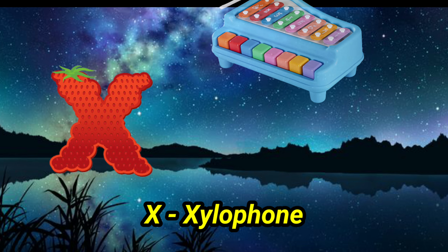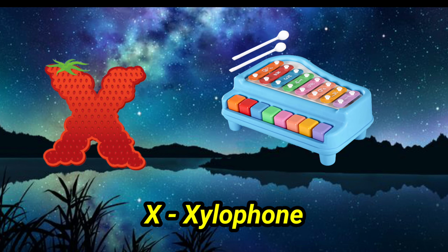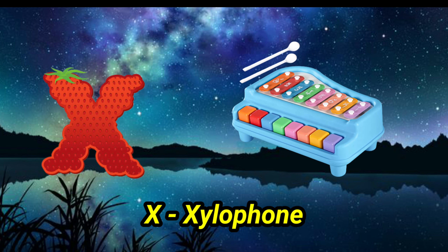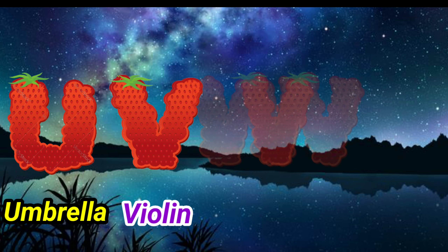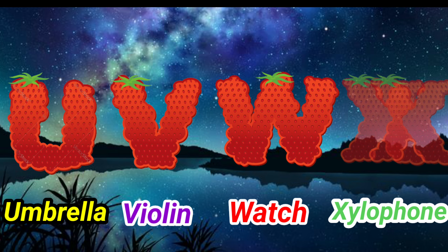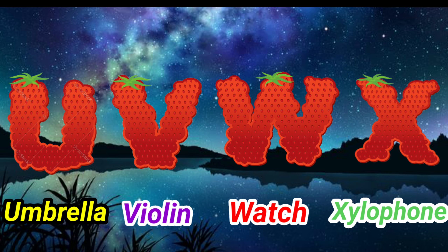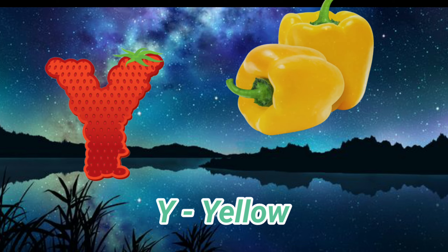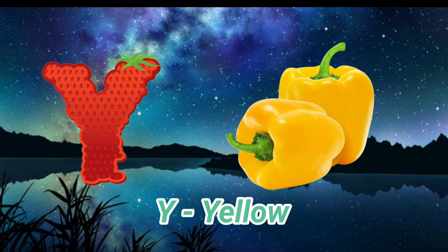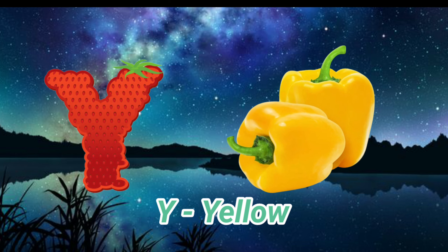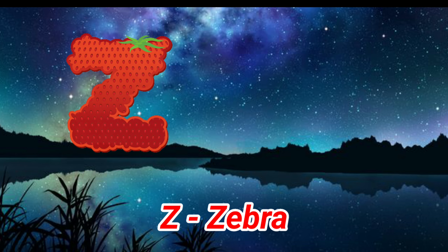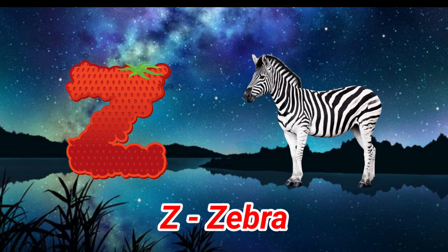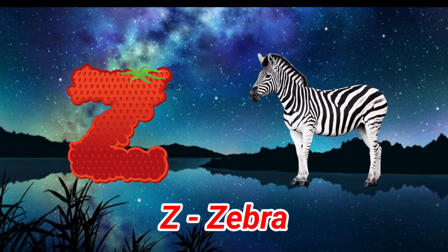X is for xylophone, x-x-xylophone. Y is for yellow, y-y-yellow. Z is for zebra, z-z-zebra.